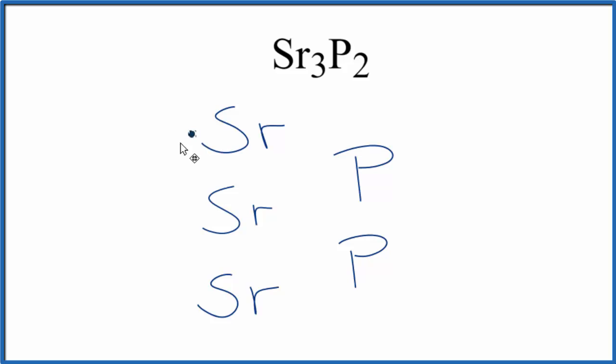Strontium is in group two. It has two valence electrons, so we'll give each one of these strontiums two electrons. Phosphorus is in group 15, sometimes called 5A. We'll give each phosphorus five valence electrons.